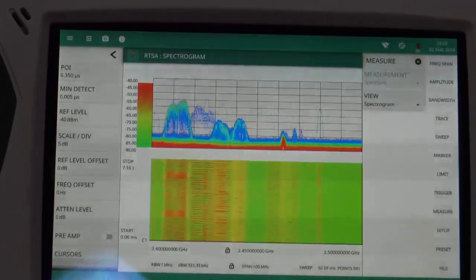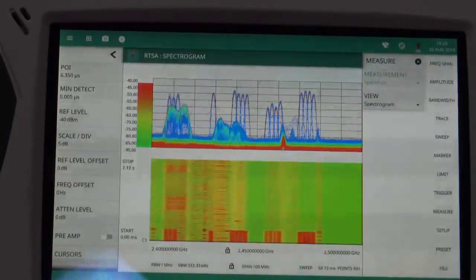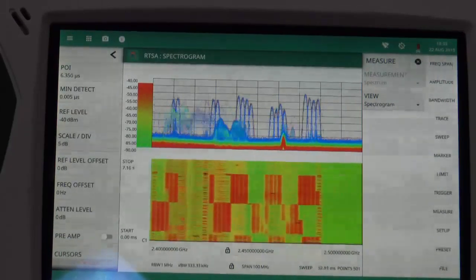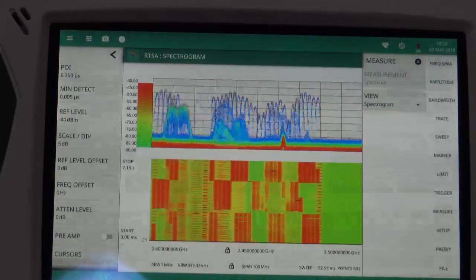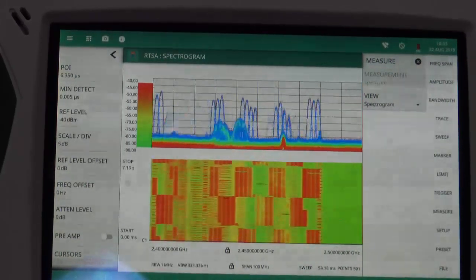Now I'm going to enable the Bluetooth feature on a smartphone. As soon as the Bluetooth feature is enabled, the smartphone goes into an enquiry scan mode where it looks for other Bluetooth devices. In this case, it's hopping in a fixed pattern and that fixed pattern is clearly visible in the spectrogram trace.